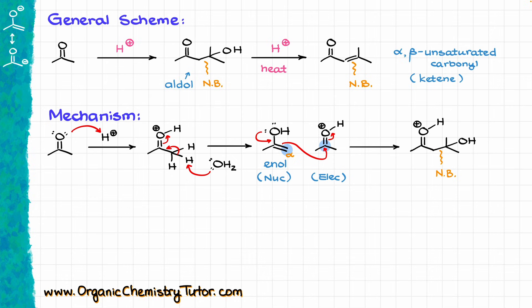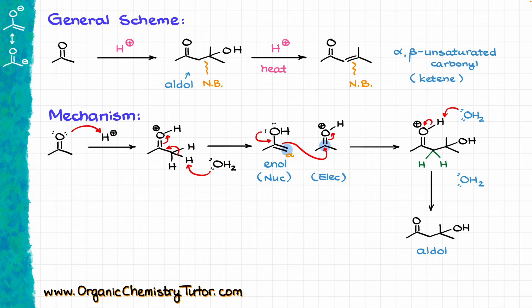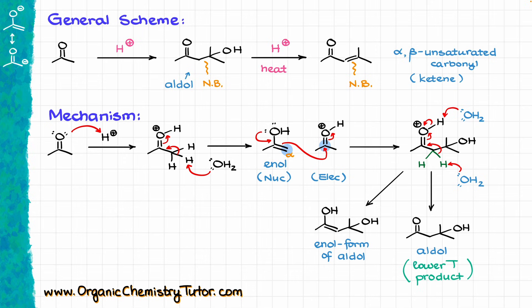From this point in the mechanism, we have two options. Option one is to deprotonate our intermediate and make our aldol, or beta-hydroxycarbonyl. Option two is to deprotonate the alpha position, giving us the enol form of our aldol. If we are running this reaction at lower temperature, we typically stop at the formation of the aldol, and that is our final product — we refer to this as the aldol addition reaction.